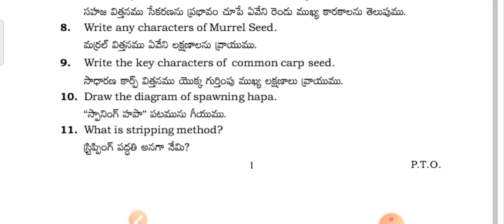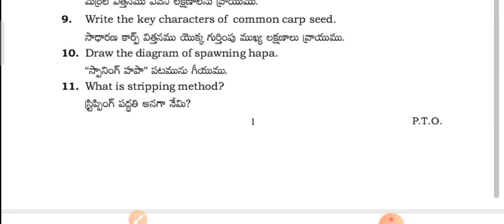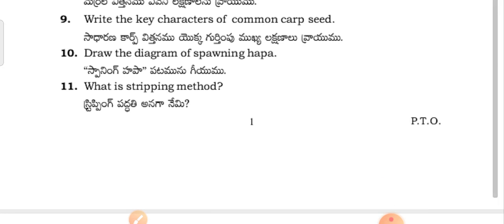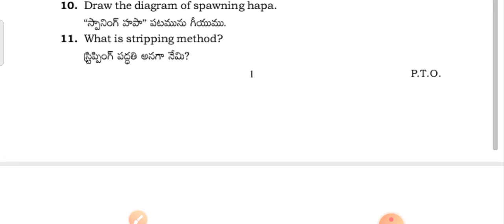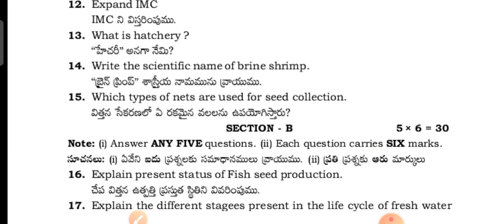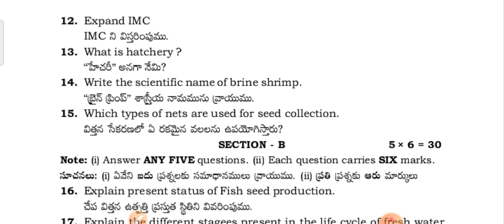More questions: What are the key characteristics of common carp seed? Draw the diagram of the spawning hapa. What is tripping method? Expand IMC. What is a hatchery? What is the scientific name of the brine shrimp?